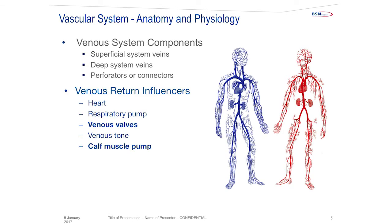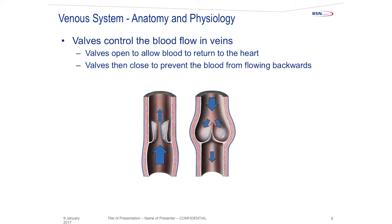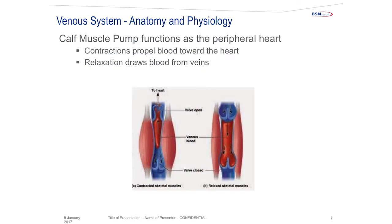What influences venous return are the heart pump, the respiratory pump, the valves in the veins, the tone of the venous system, and also the calf muscle pump. Valves control the blood flow in veins — they open to allow blood to return to the heart and they close to prevent blood from flowing backwards. The calf muscle pump functions as the peripheral heart: when it contracts it propels blood toward the heart, and when it relaxes it draws blood from the veins.